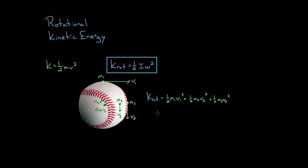Something magical is about to happen — this is one of my favorite short derivations. K-rotational is the sum of all the ½mv² for every point on the baseball. The problem is that all these points have different speeds V. But we can use a trick: for rotating objects, V = Rω, where R is the distance from the axis and ω is the angular speed. So we replace V with Rω, and we still have to square it.